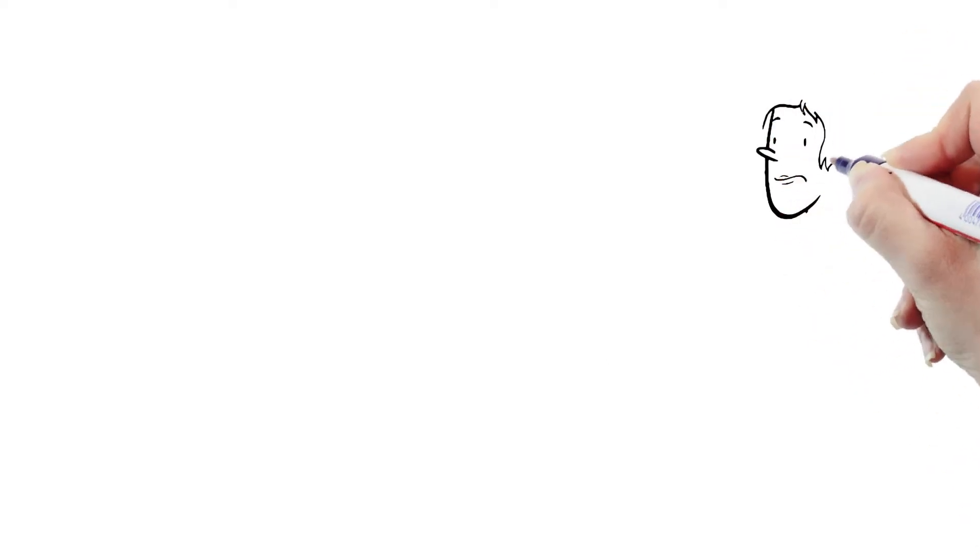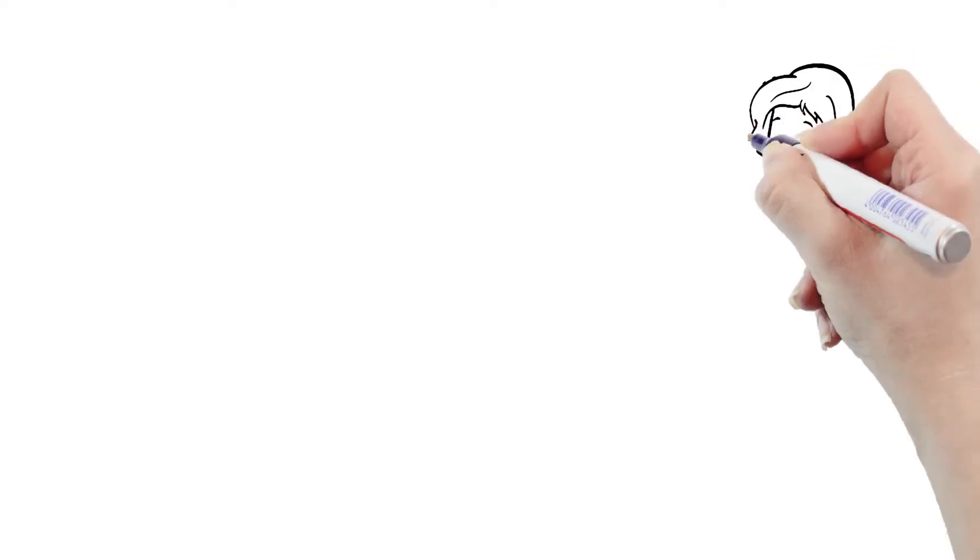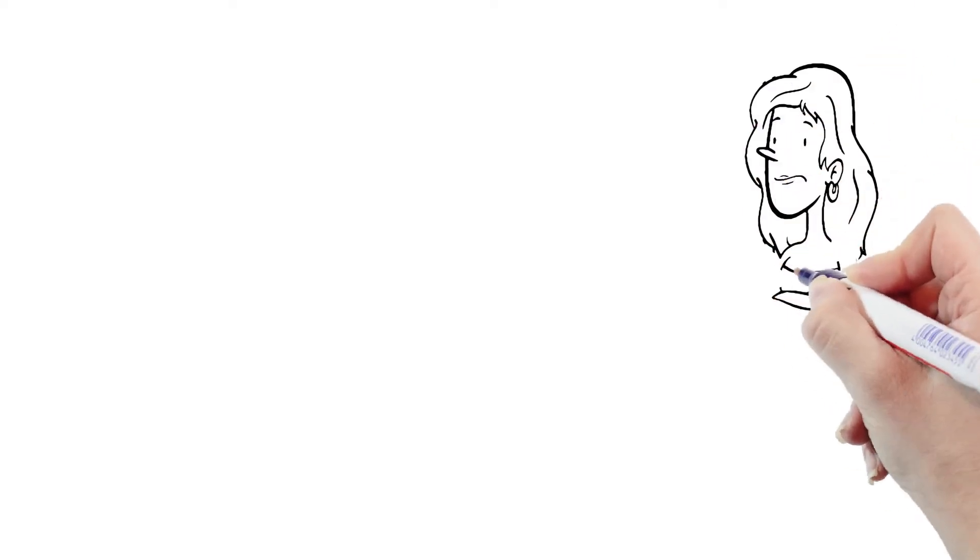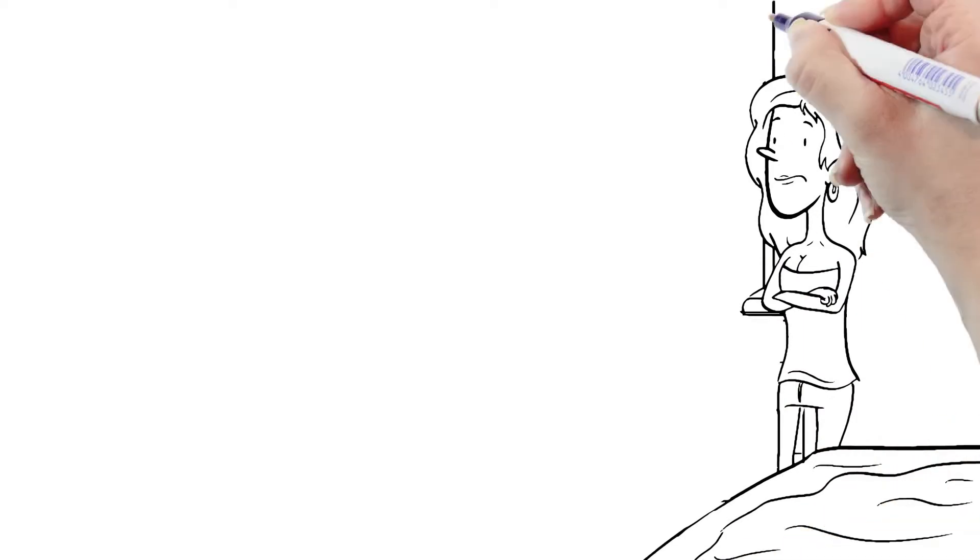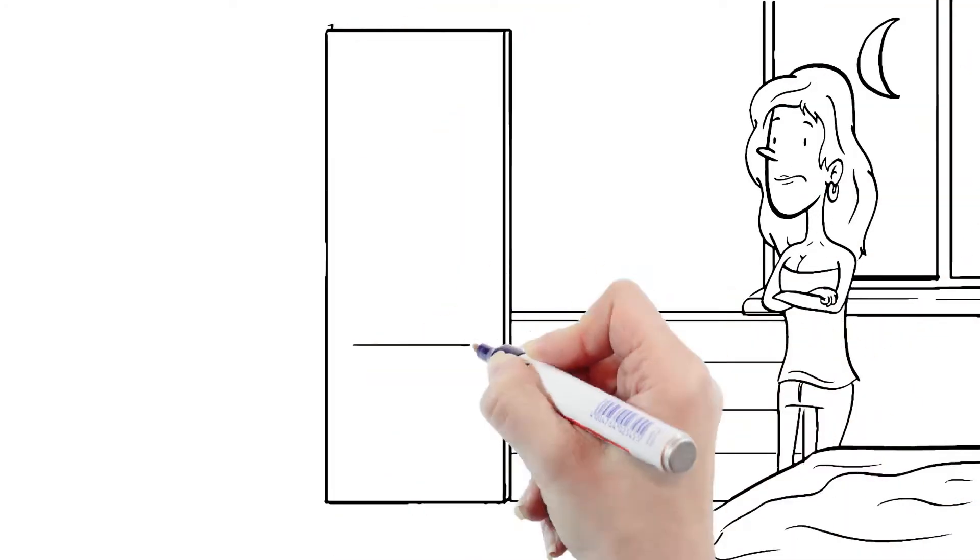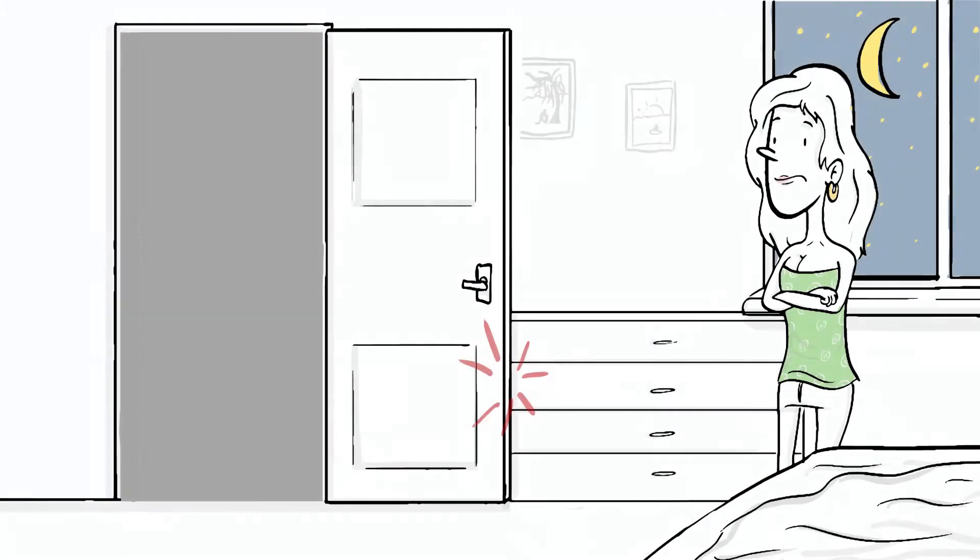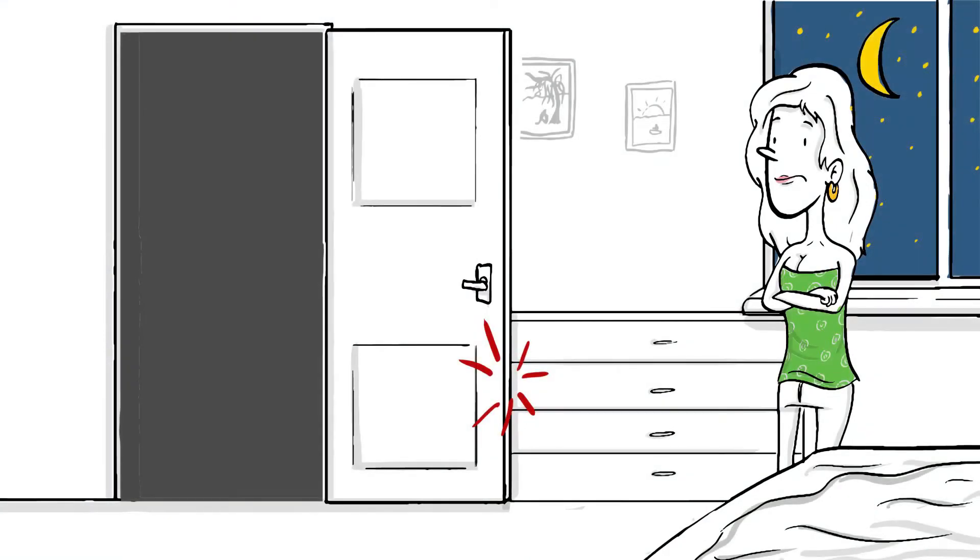What Connie would really like is to put the dresser against the wall next to the bathroom. Not only would it look great there, but she wouldn't be tripping over it. Unfortunately, the bathroom door swings out, and so that space is unusable.